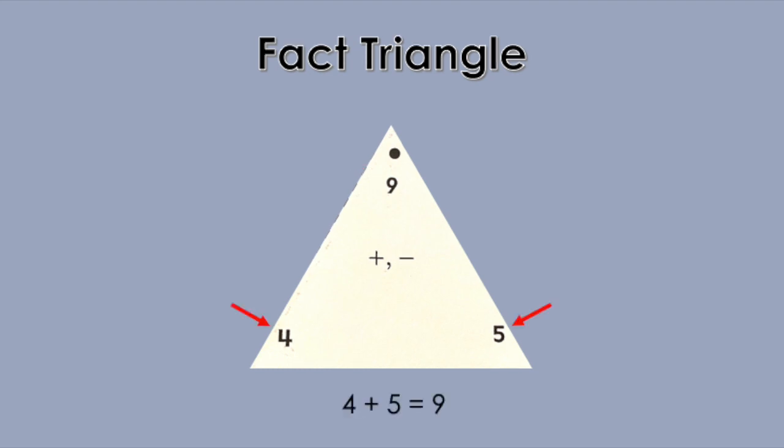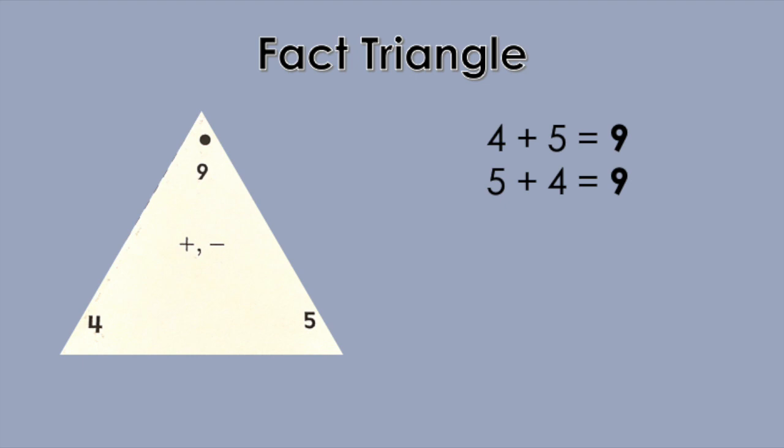We see our first addition fact by adding the two addends in the bottom corners. 4 plus 5 equals 9. When we flip our addends around, we know that the turnaround fact is 5 plus 4 equals 9. As you can see, our addition facts always end with the Big Daddy.